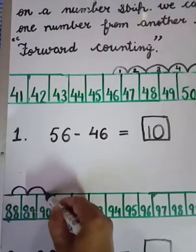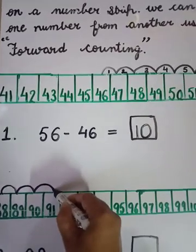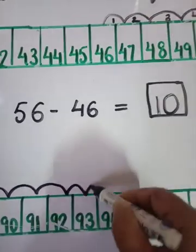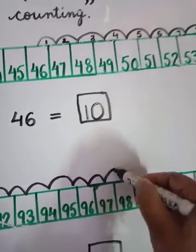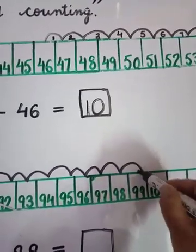89, 90, 91, 92, 93, 94, 95, 96, 97, 98, 99. Okay.